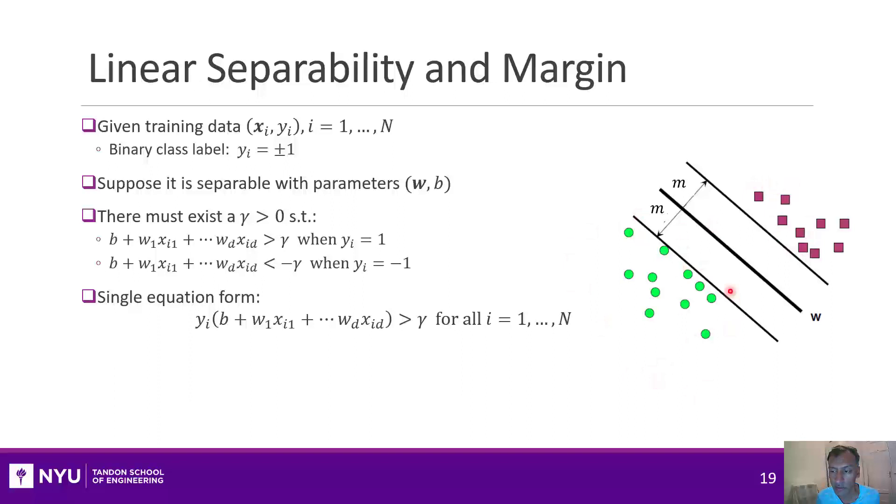What that means is that you have some parameters so that you can find a hyperplane that separates the points. For example, here we have the green points, and here we have the purple points, and we can draw a line. Now, mathematically, we can write the fact that there's a separable hyperplane by these equations.